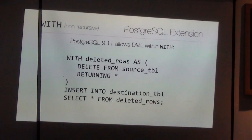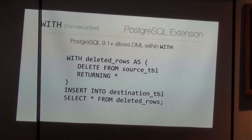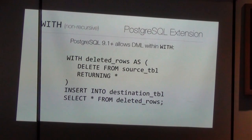Postgres also has an extension for the WITH clause called writable CTEs — common table expressions that can modify data. Inside the CTE you can have a DELETE statement (not standard SQL). The query deletes from a source table and returns the deleted rows, which become visible under the CTE name. In the main query, you do INSERT INTO destination SELECT FROM deleted rows — effectively moving data: deleting from source and inserting into destination in one statement.